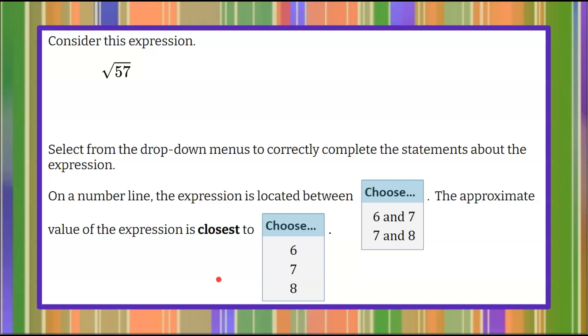So here's where you pause the video. You determine the two statements that are correct about the square root of 57. You're going to complete them using these menus. Then come back and hit play to see the solution. Good luck.